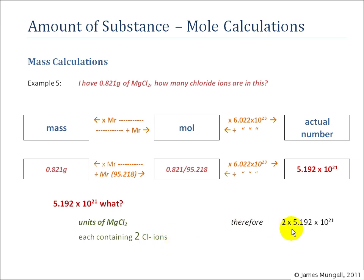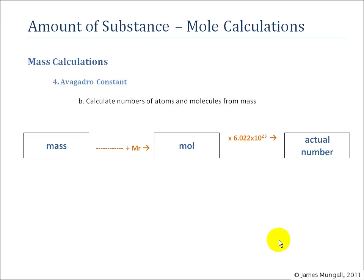So therefore, if we want to work out the amount of chloride ions, we need to do two times that number, which gives 1.038 times 10 to the 23 Cl minus ions. So just to summarize here, when we're doing these calculations of actual numbers, take the mass divided by the MR gives you the amount in mole. Then multiplied by the Avogadro constant gives you the actual number.